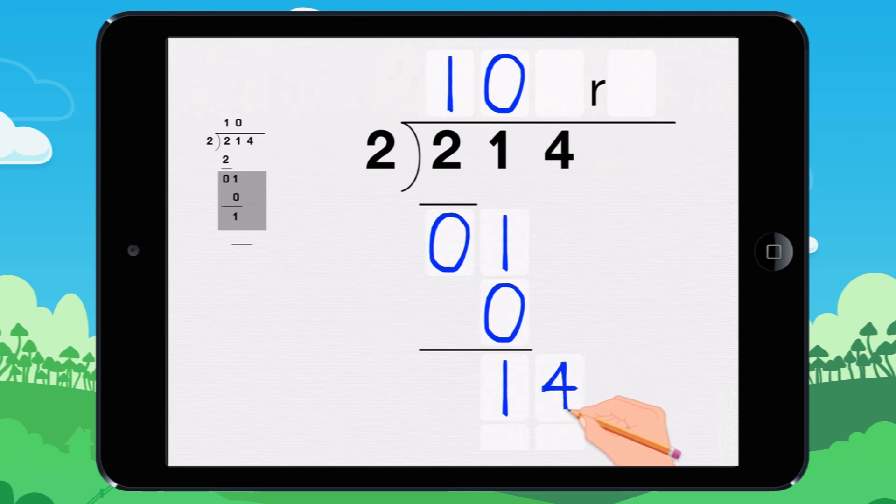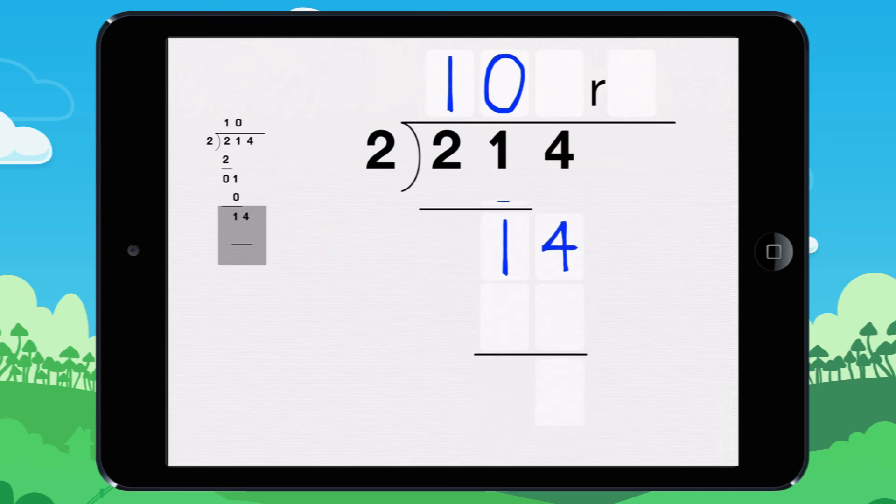Bring down the 4. How many times does 2 go into 14? It goes in 7 times, because 7 times 2 equals 14.